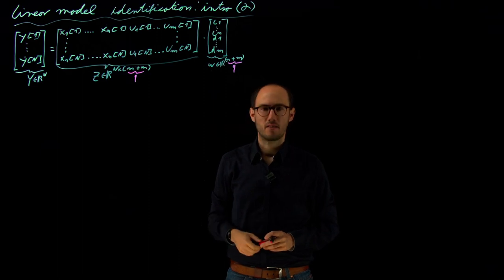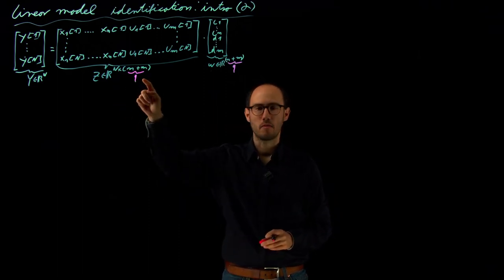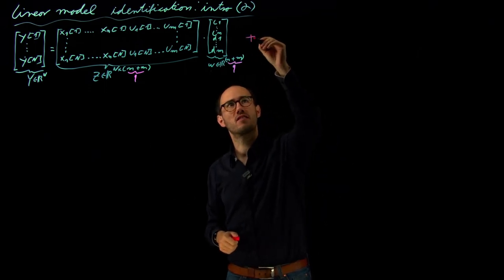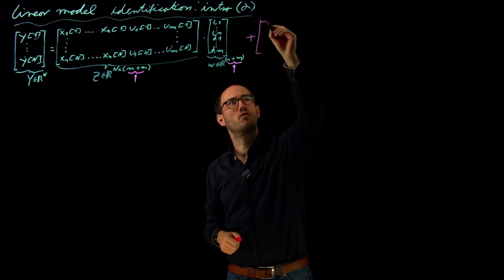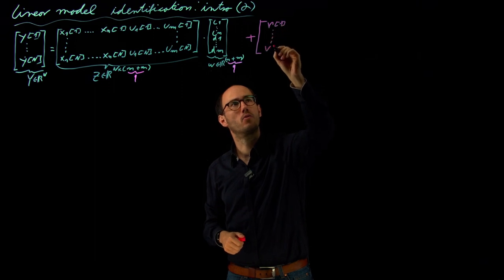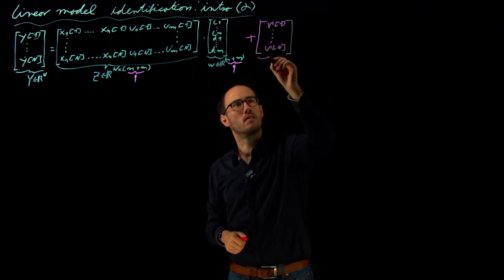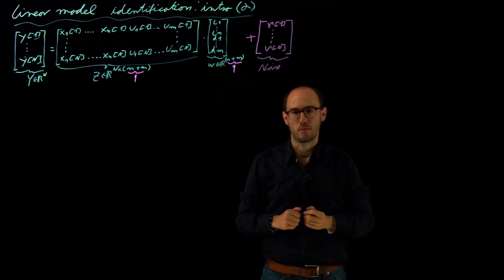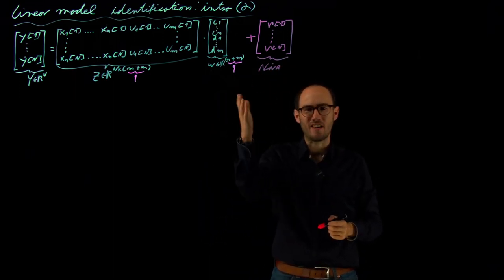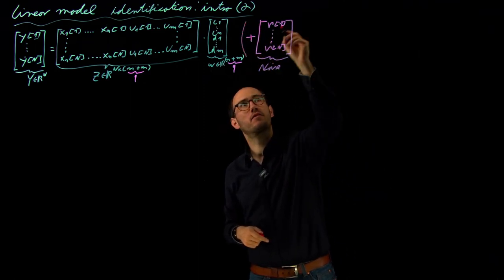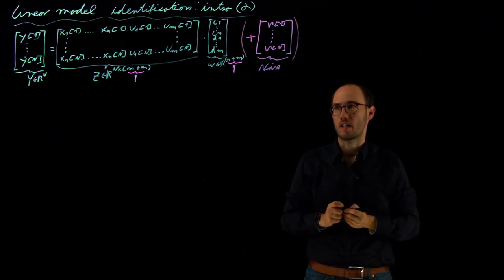However, it makes sense to take even more measurements than parameters q, because normally we have some noise, which I denote as μ₁ until μₙ. That is a noise vector from some random process—measurement noise which we cannot model. It's an additive term which is not part of our linear model, which is why I put it in parentheses.